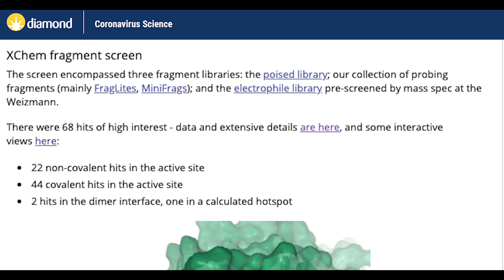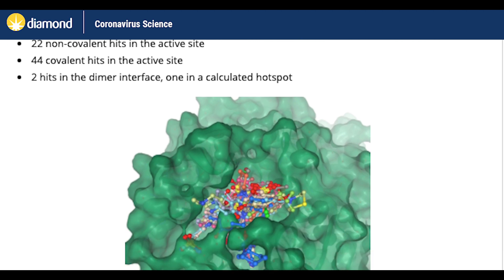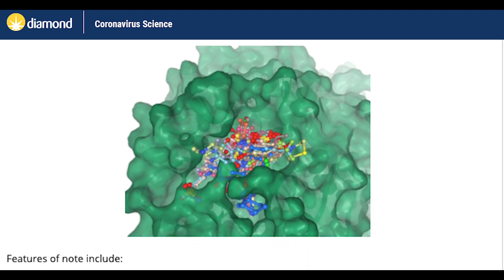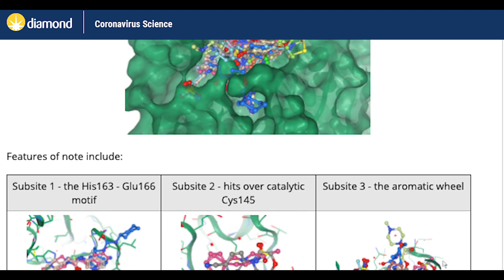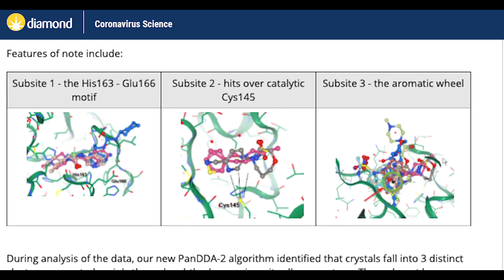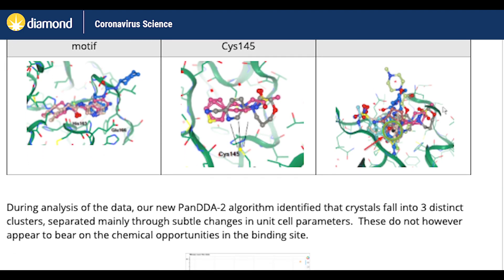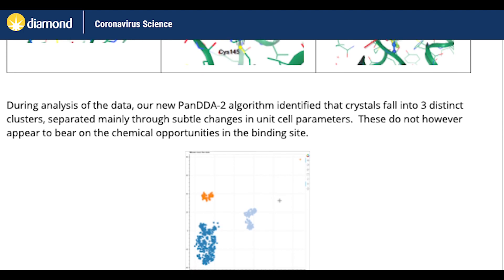A company called Diamond has done this fragment-based screen using x-ray crystallography on a large X-Chem set of fragments, and they found a number of active fragments—I think 60 or more—and they've made them available to everyone to try and come up with the best drugs. So this is a really exciting opportunity for the scientific community to work together to come up with new inhibitors of this protease.